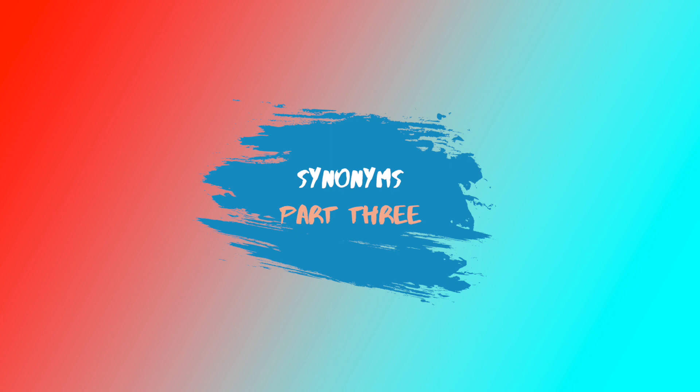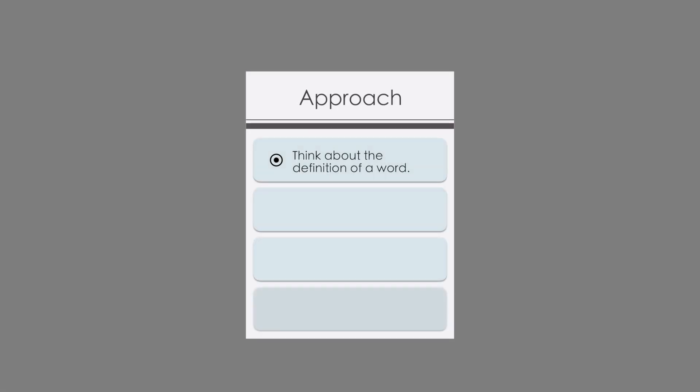This is going to be testing us on our knowledge of word definitions, our ability to recognise words, and our skills in selecting an appropriate synonym. For the approach, it's good to be thinking about the definition of a word and importantly the whole sentence and the surrounding words. We'll work through it in a process of elimination that starts from the left and moves over to the right of the information presented.